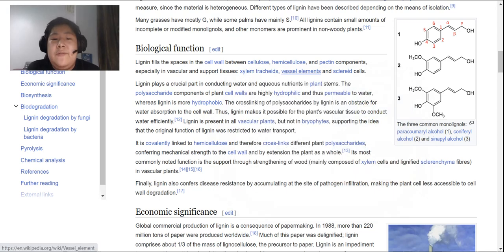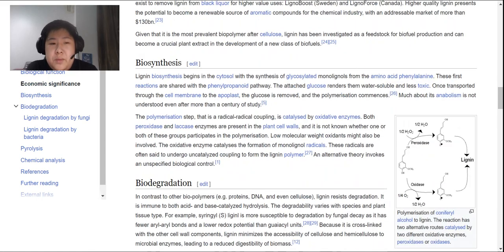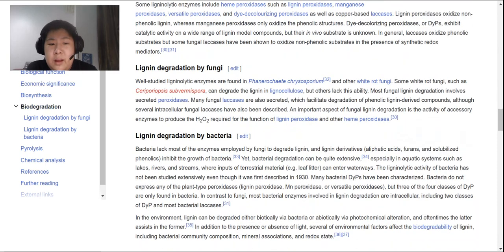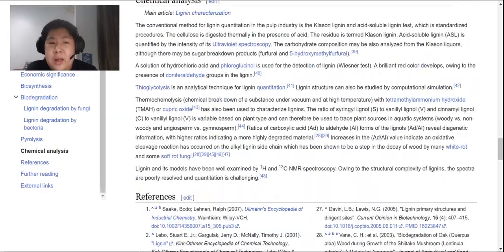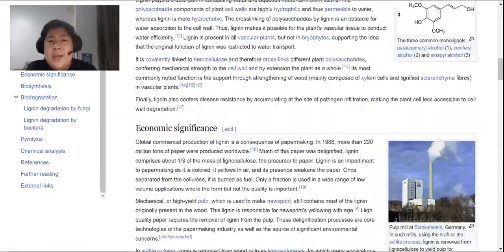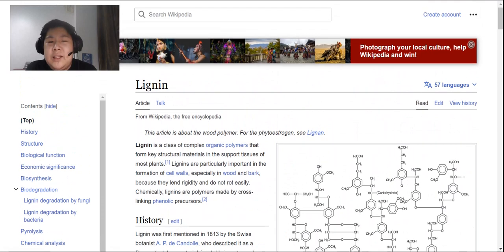And then, when it dies, it just functions as the wall of the xylem, allowing water to be transported, if I remember correctly. There's a crucial part in conducting water and aqueous nutrient in plant stems. The components of plant cell walls are highly hydrophilic and thus permeable to water, whereas lignin is more hydrophobic. This is definitely not what we're learning. But I guess as long as I get the general idea of lignin, I guess I should be fine.